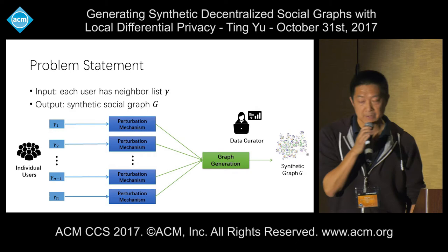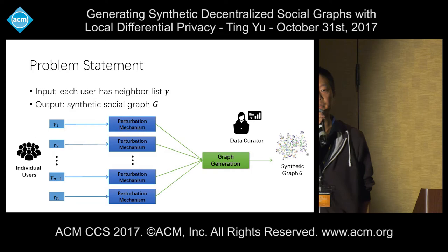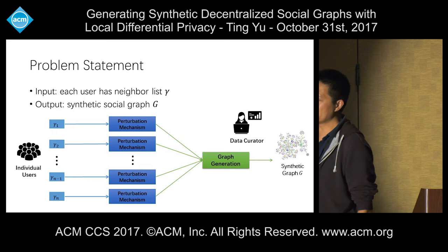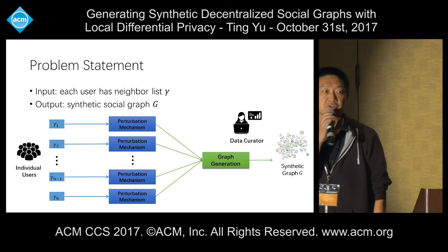Here is the problem formulation. Suppose each user only knows their neighbor list—I only know that I am a friend of this person, that person, et cetera. Nobody knows anything about the whole graph. We want to apply some perturbation mechanism so that we can collect information about users' social connections and finally generate a synthetic social graph that captures important properties of the original underlying decentralized social graph.